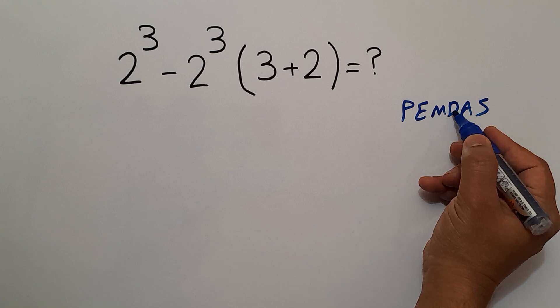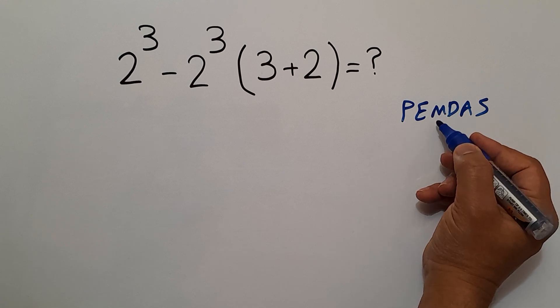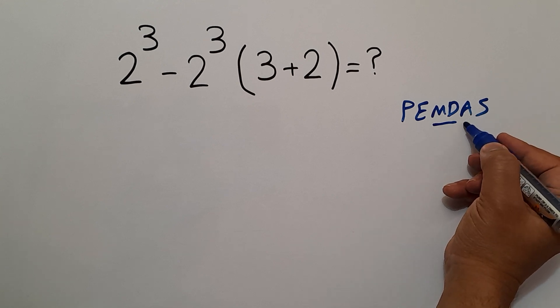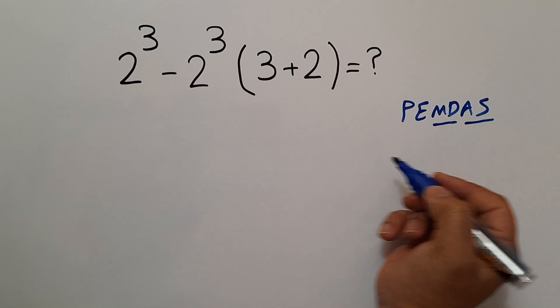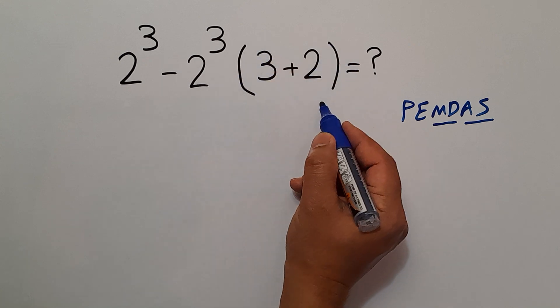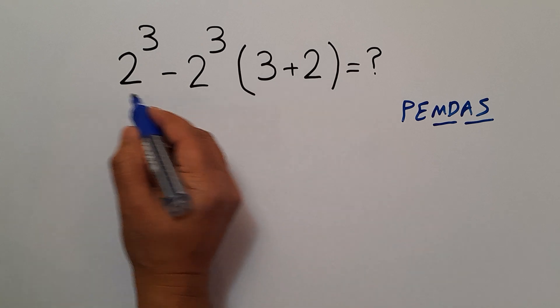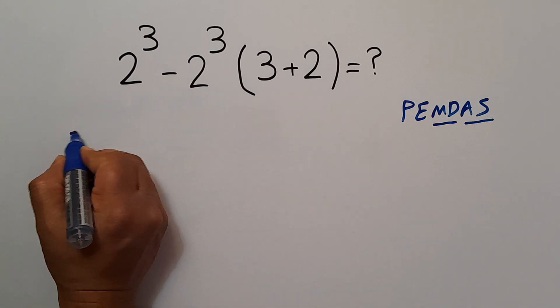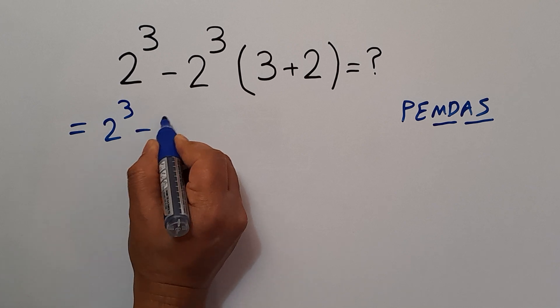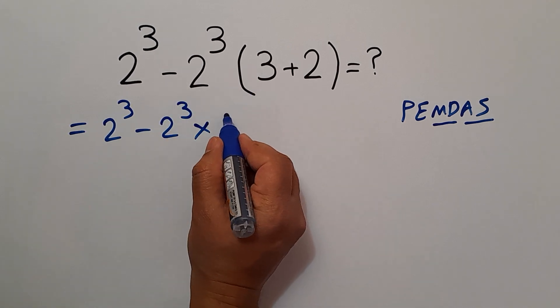Remember that multiplication and division have equal priority and we work from left to right. The same goes for addition and subtraction. So here, we first do these parentheses. 3 plus 2 gives us 5. So our expression equals 2 cubed minus 2 cubed, then times just 5.